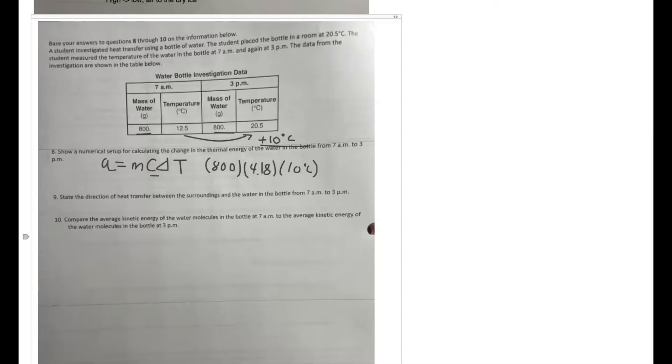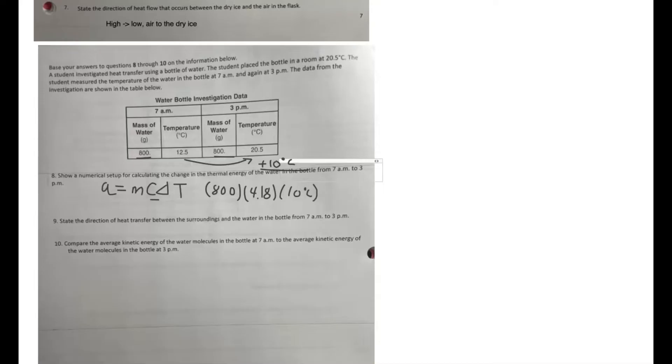Let's see what number nine is saying. State the direction of heat transfer between the surroundings and the water in the bottle between 7 a.m. and 3 p.m. So the water increased in temperature, and therefore that means the heat must have come from the air. So heat transfers from air to water here. All right, oh not from the air, we can just say the surroundings because maybe it was something else.